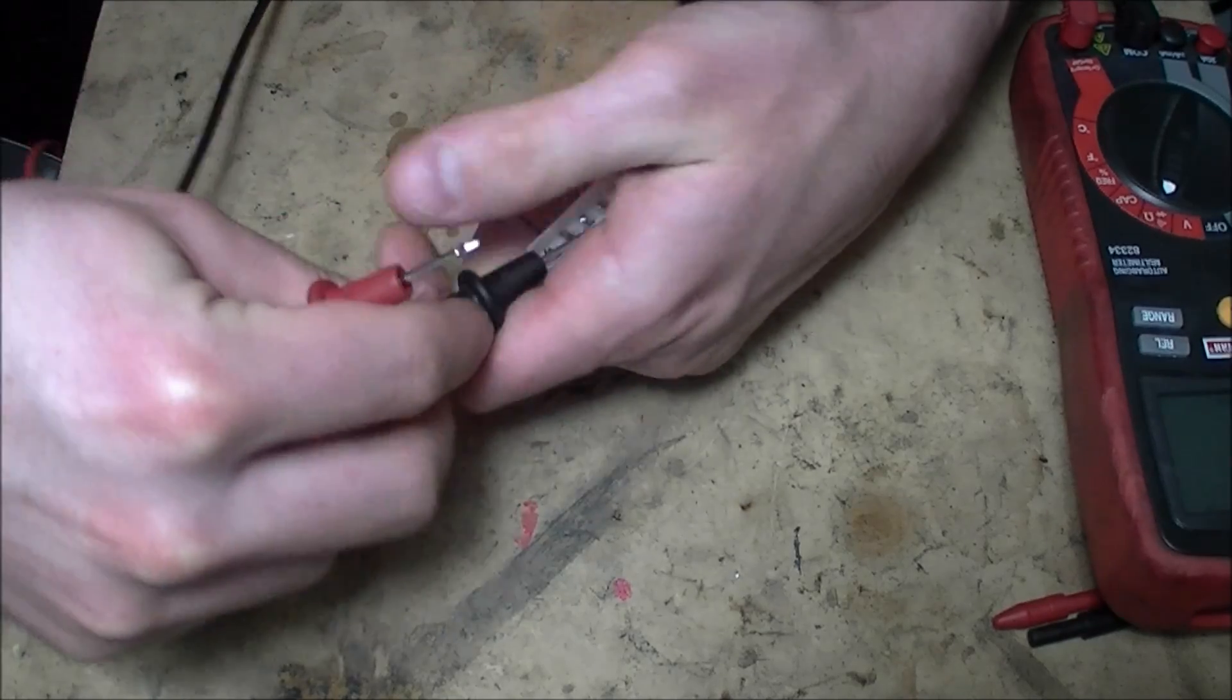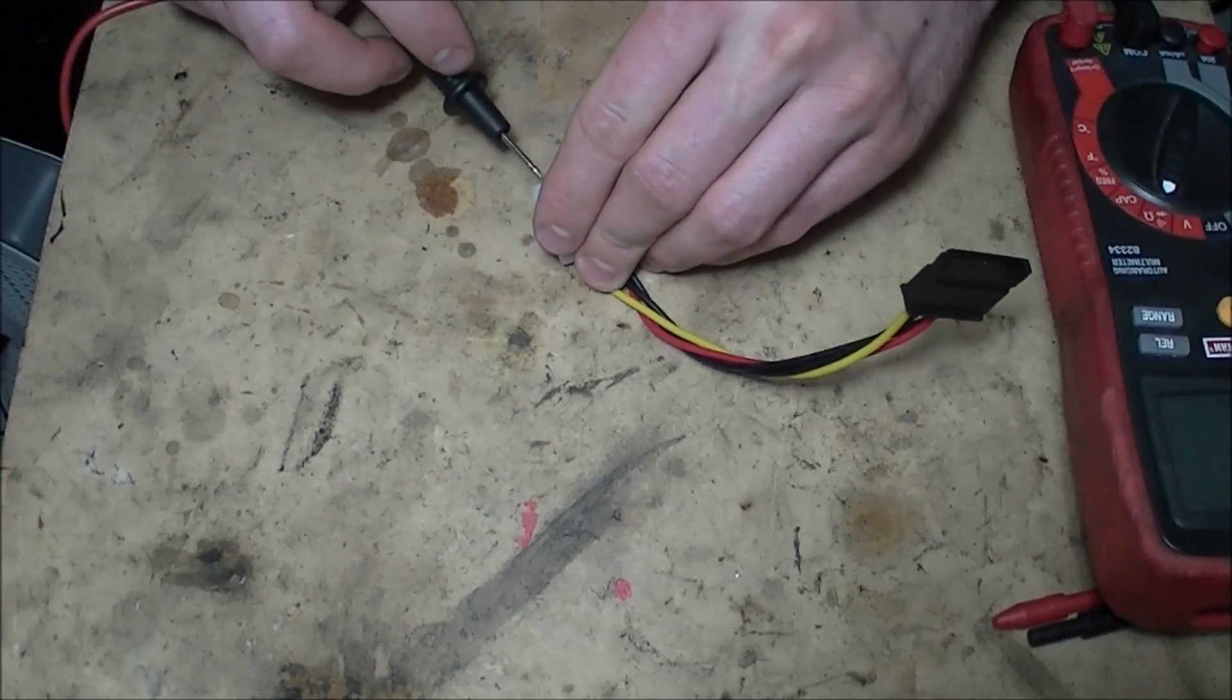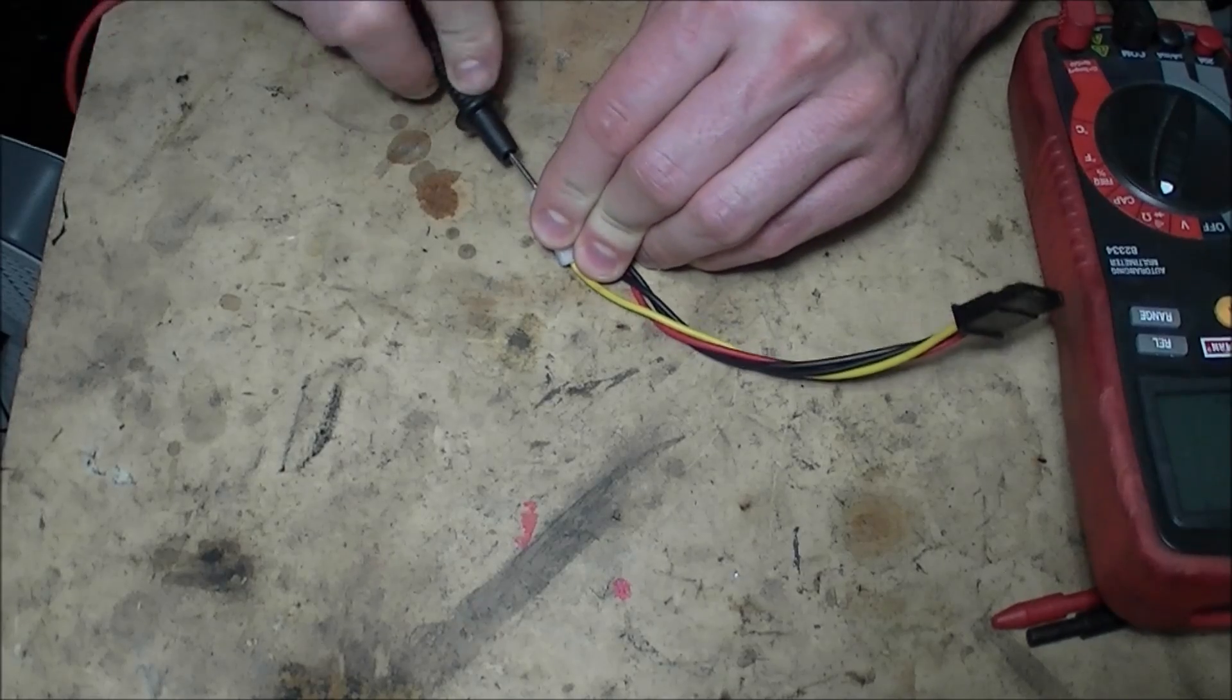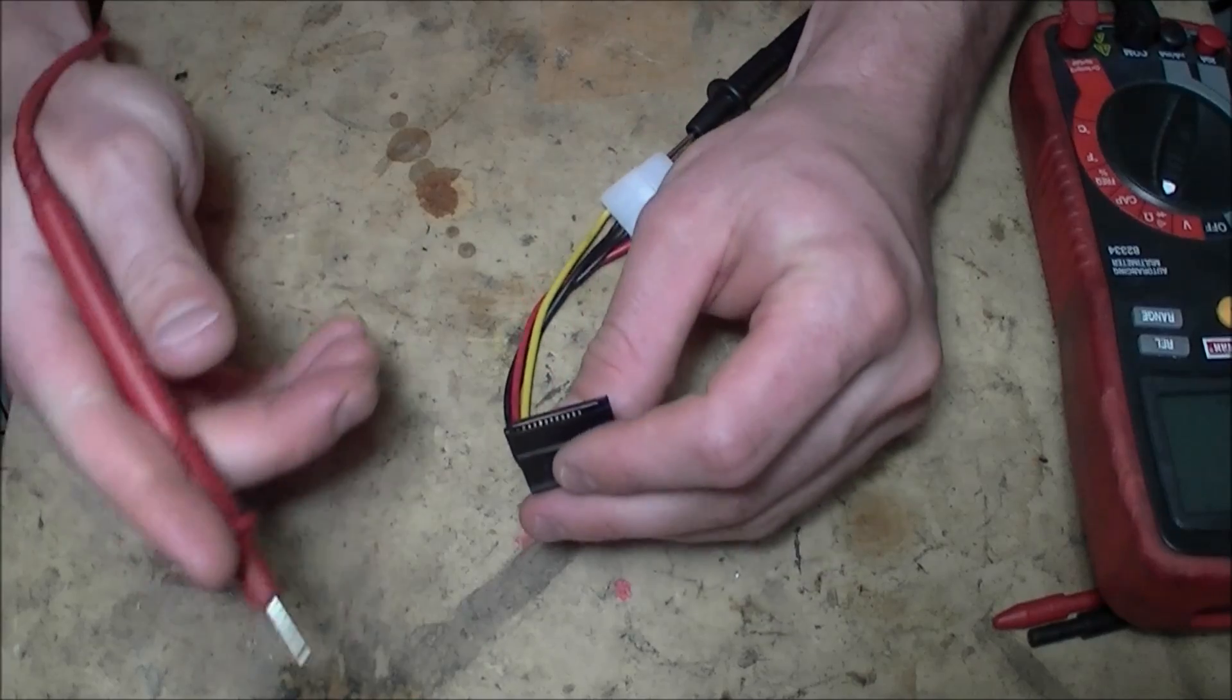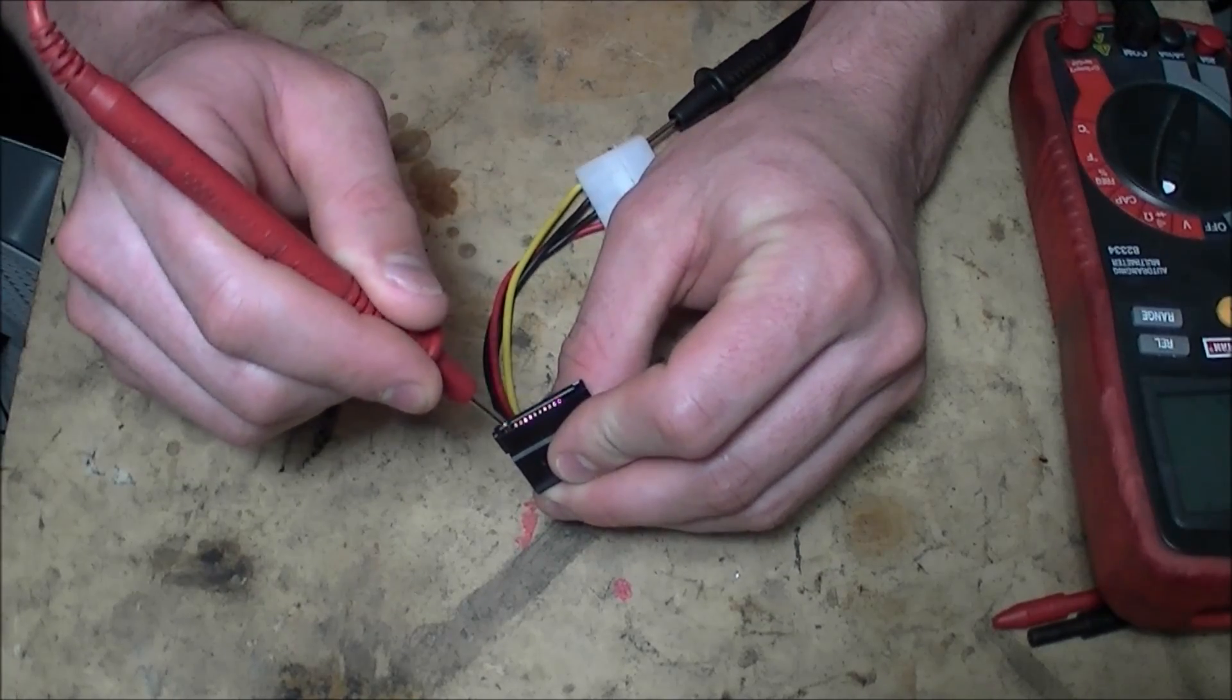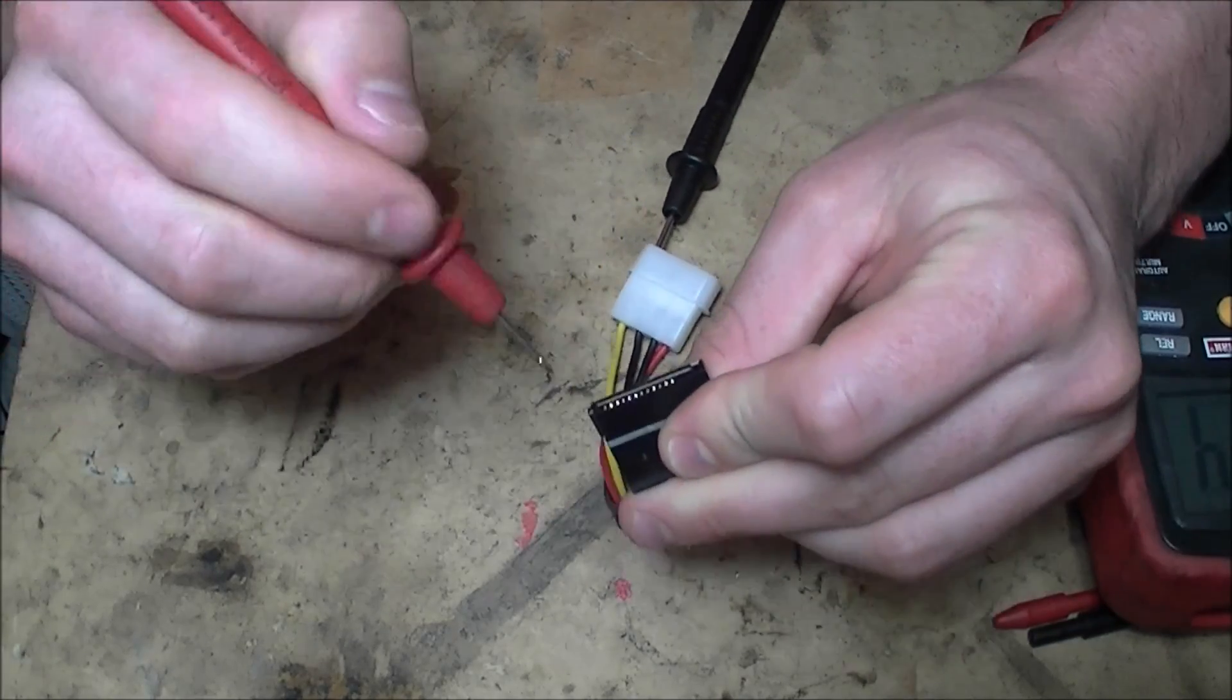All right, there we go. That's on the yellow, and then I'm just going to start testing. Okay, just going to run it through. Obviously it's not doing nothing. Oh, there it is right there! So it's telling me that this pin is where this wire runs.